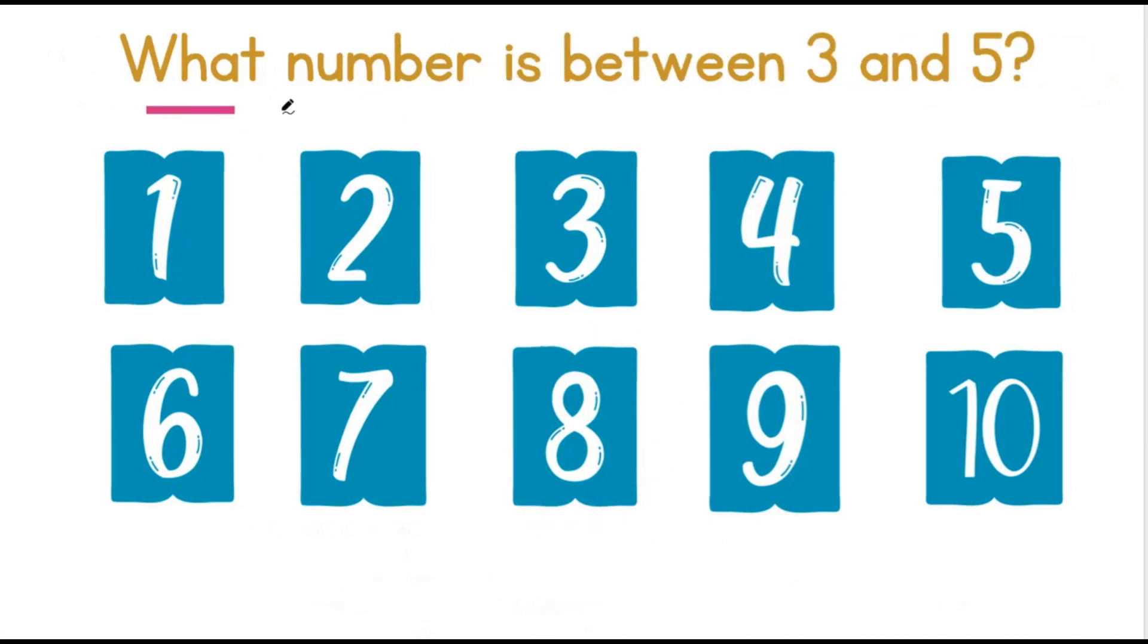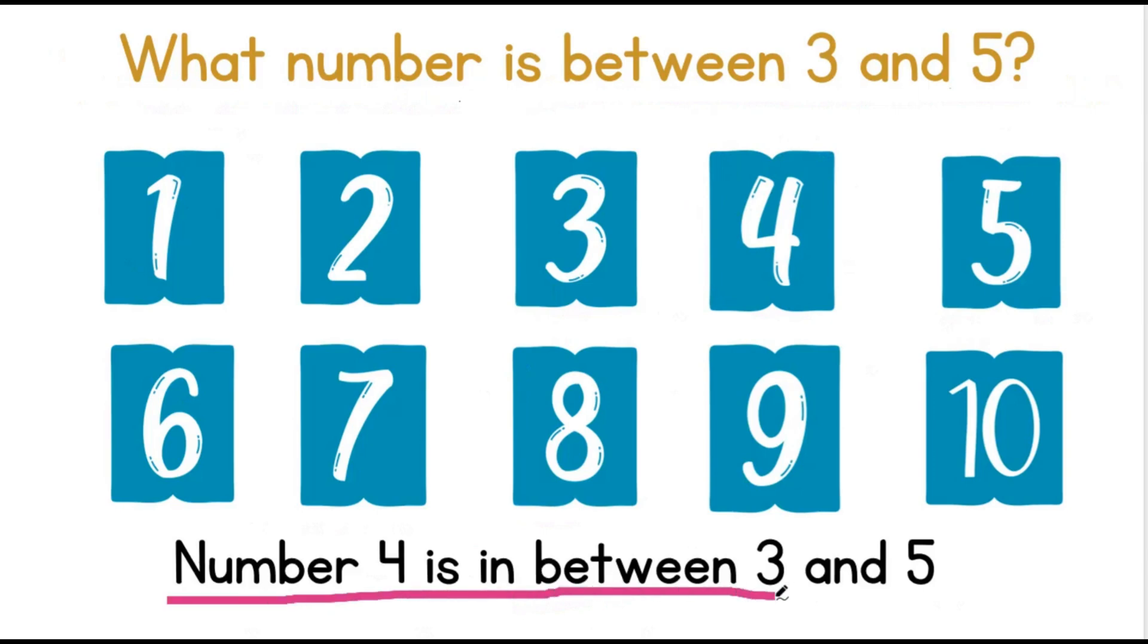What number is between 3 and 5? This is 3 and this is 5. So, what number is between 3 and 5? Number 4 is in between 3 and 5.